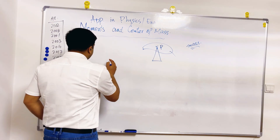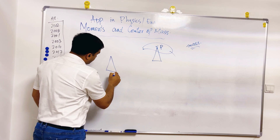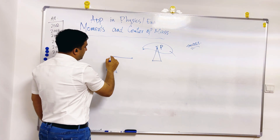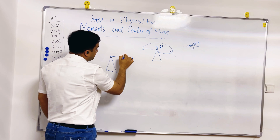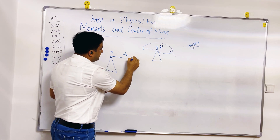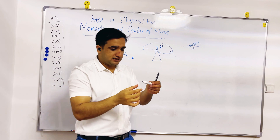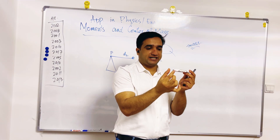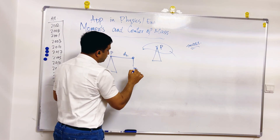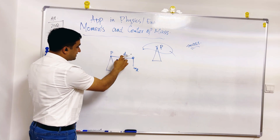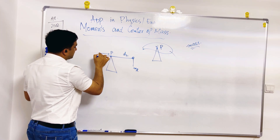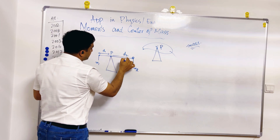Suppose we have a rod, and the fulcrum is at point P. From point P, the distance to one end is d2 and to the other end is d1. At each end of the rod we have connected some masses — one mass is m2 at distance d2, and one mass is m1 at distance d1.